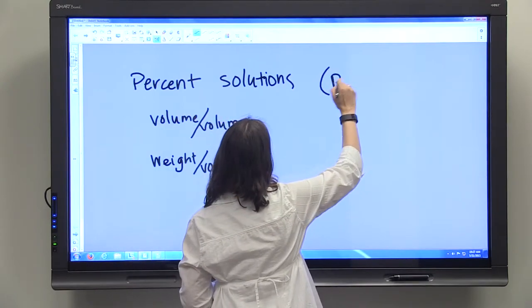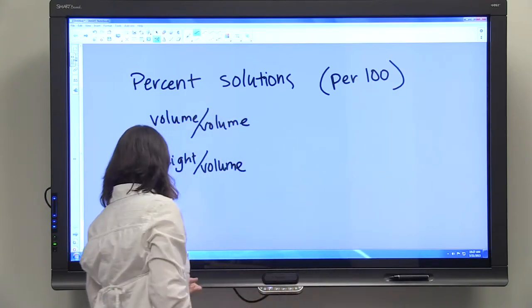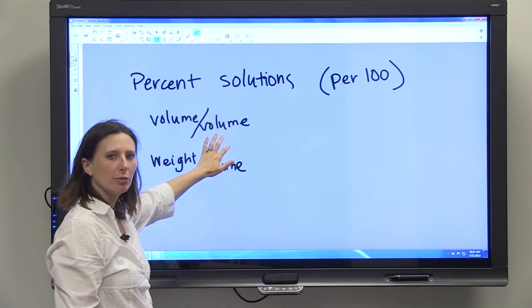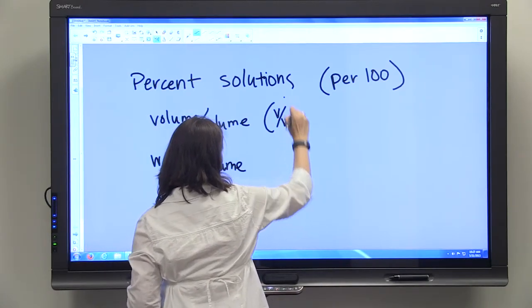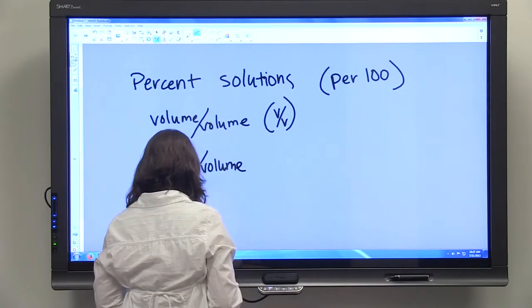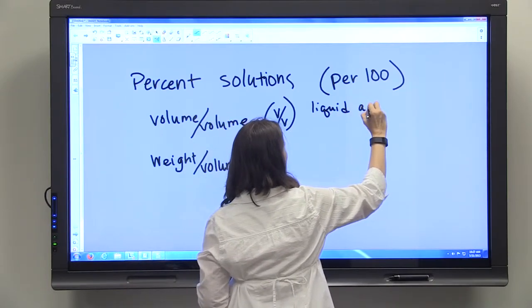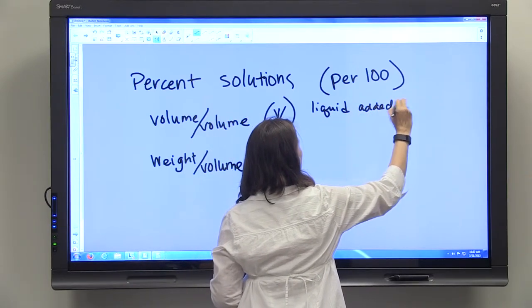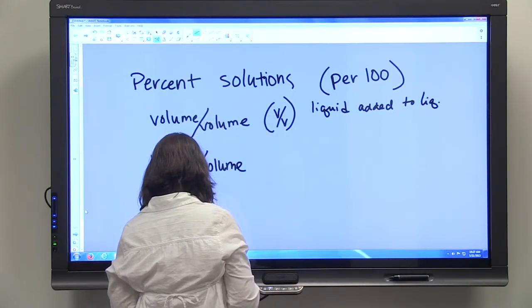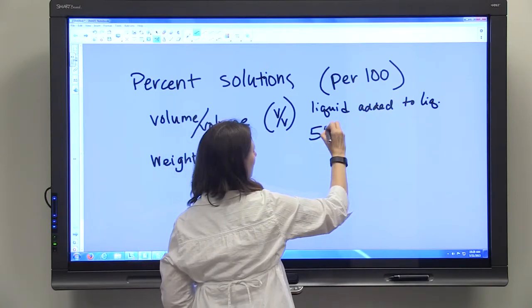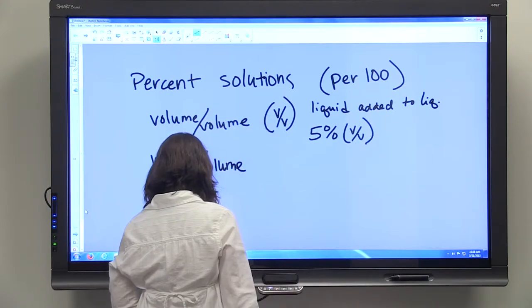As with all percents, these are per 100. If you're given a volume to volume concentration, sometimes that's expressed with a V over V in parentheses. That's telling you that it's a liquid being added to a liquid. So say we're given that we want a 5% volume to volume solution, we know that